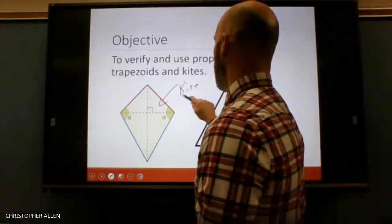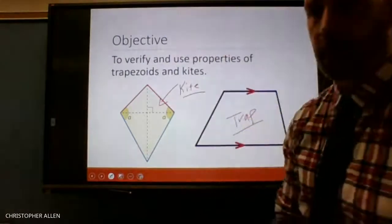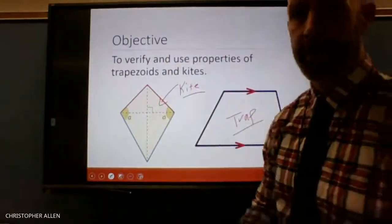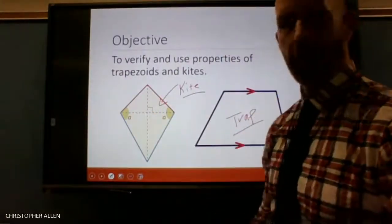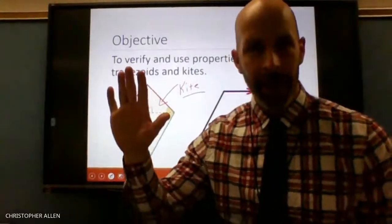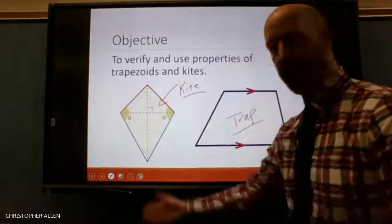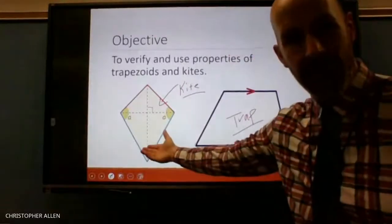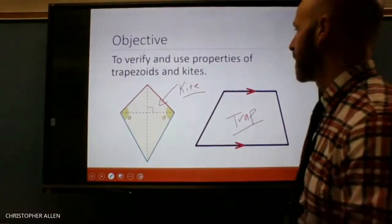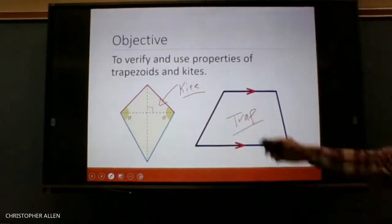Not sure how familiar you guys are with kites, but used to be when you would get a kite, that's the shape it would look like. It seems nowadays — have any of you guys ever flown a kite? So anyway, that's a kite and that's a trapezoid.